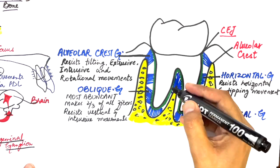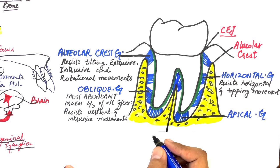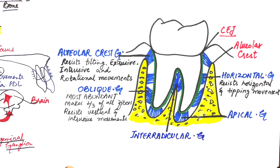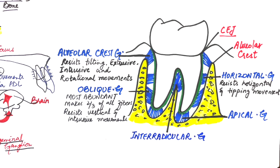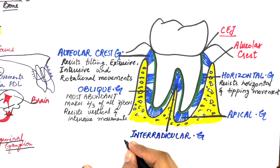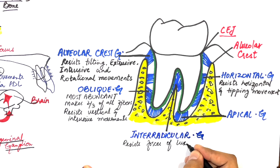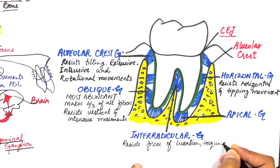And finally, the inter-radicular group, as the name suggests, is found in between the roots of multi-rooted teeth, running from the cementum into the inter-radicular bone. These fibers resist forces of luxation, torquing, and tipping movements.